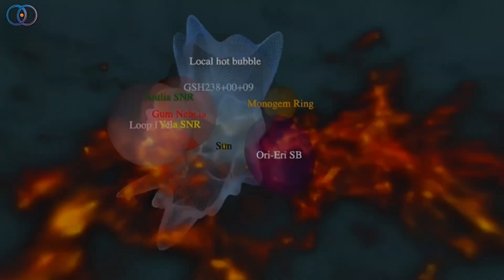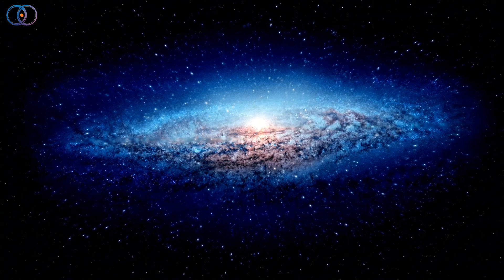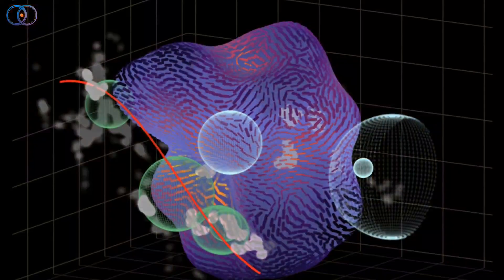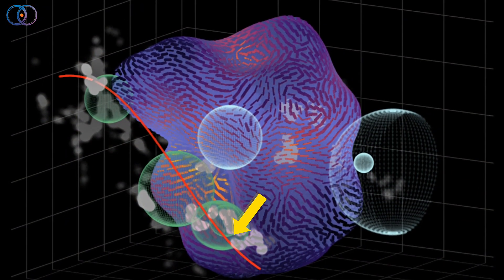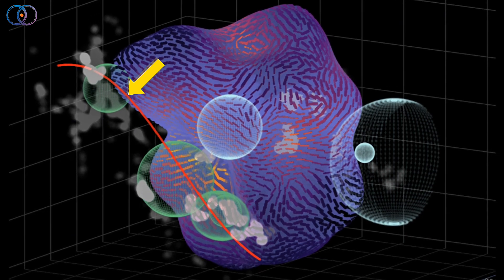Recently, though, astronomers made a discovery that feels almost like a science fiction story coming true. While building a 3D map of our galaxy, they uncovered something that looks like a tunnel stretching through space. It's not exactly a wormhole, but it behaves a bit like one.